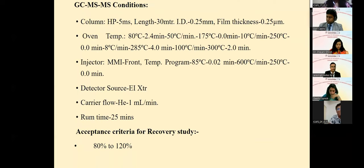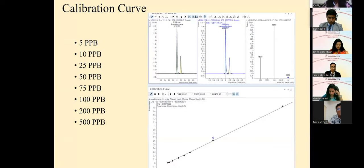For GC-MS/MS conditions, a HP-5MS column was used with electron ionization, helium flow of 1 ml per minute, and a run time of 25 minutes.